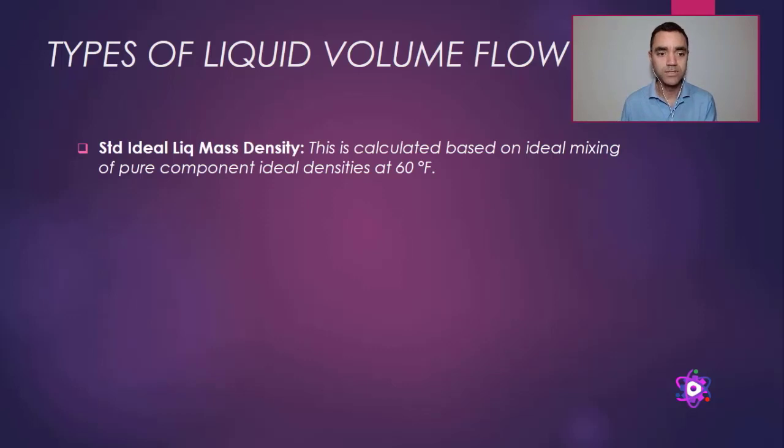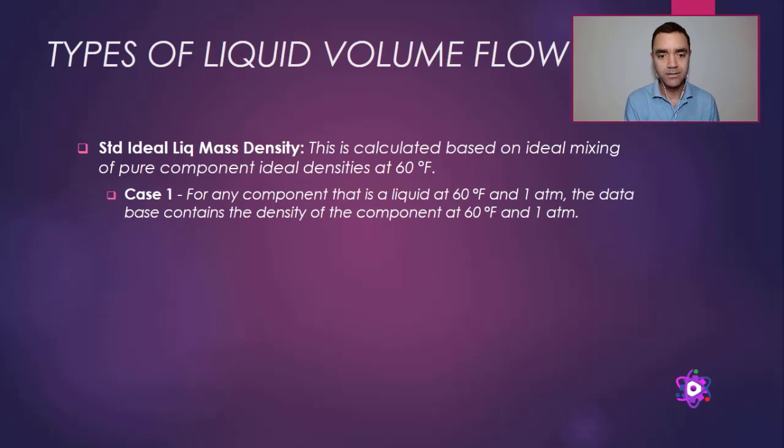When talking about standard ideal liquid mass density, Aspen Plus does calculations based on 60°F. Case 1: For any component that is a liquid at 60°F and 1 atm, the database contains the density of the component at 60°F and 1 atm.